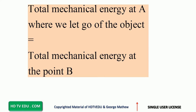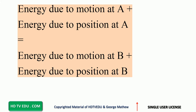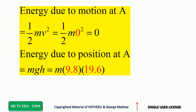Total mechanical energy at A, where we let go of the object, equals total mechanical energy at point B. Energy due to motion at point A plus energy due to position at point A equals energy due to motion at point B plus energy due to position at point B.